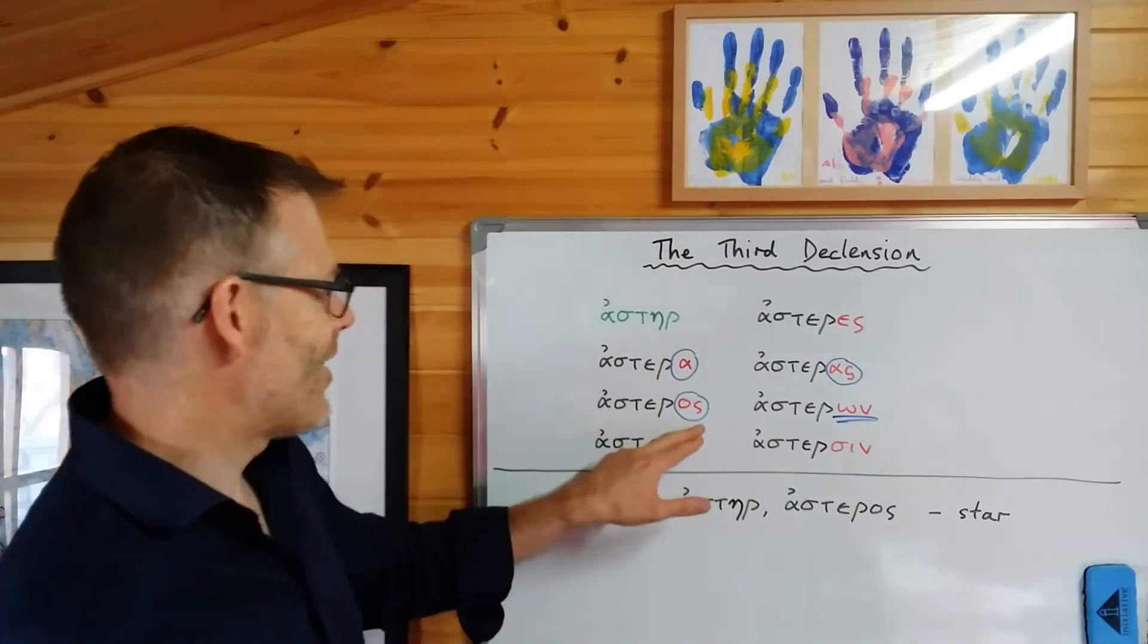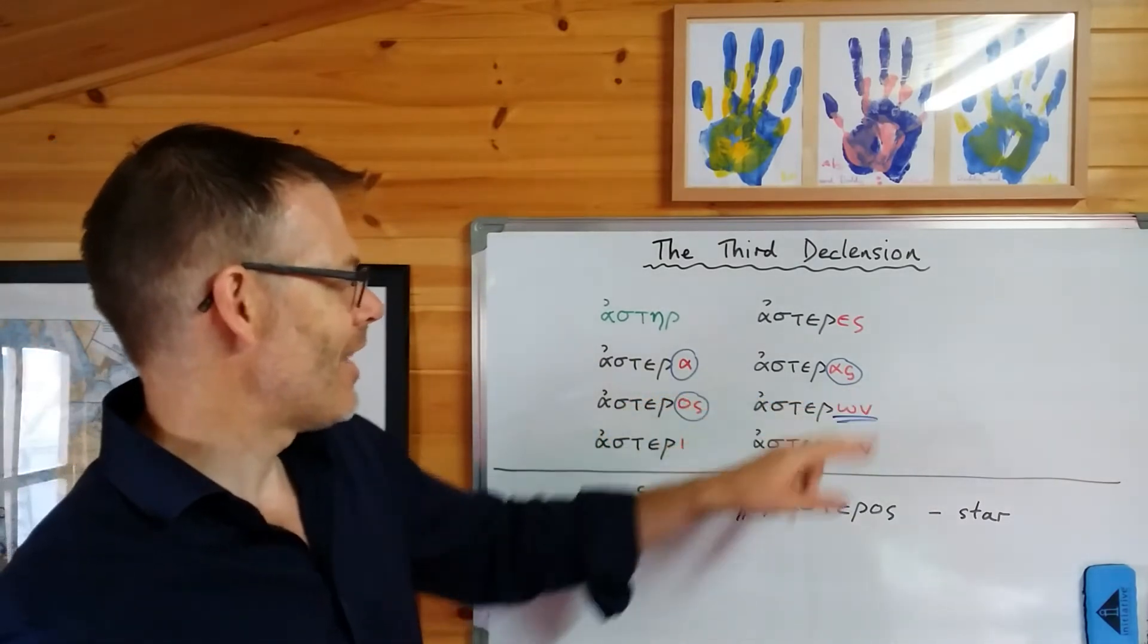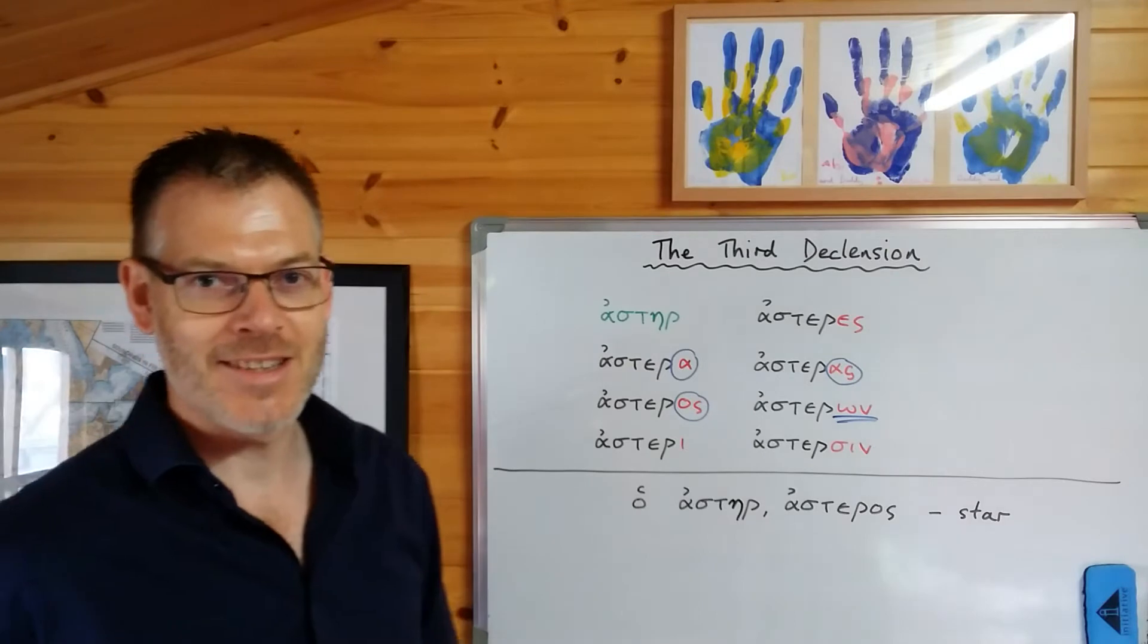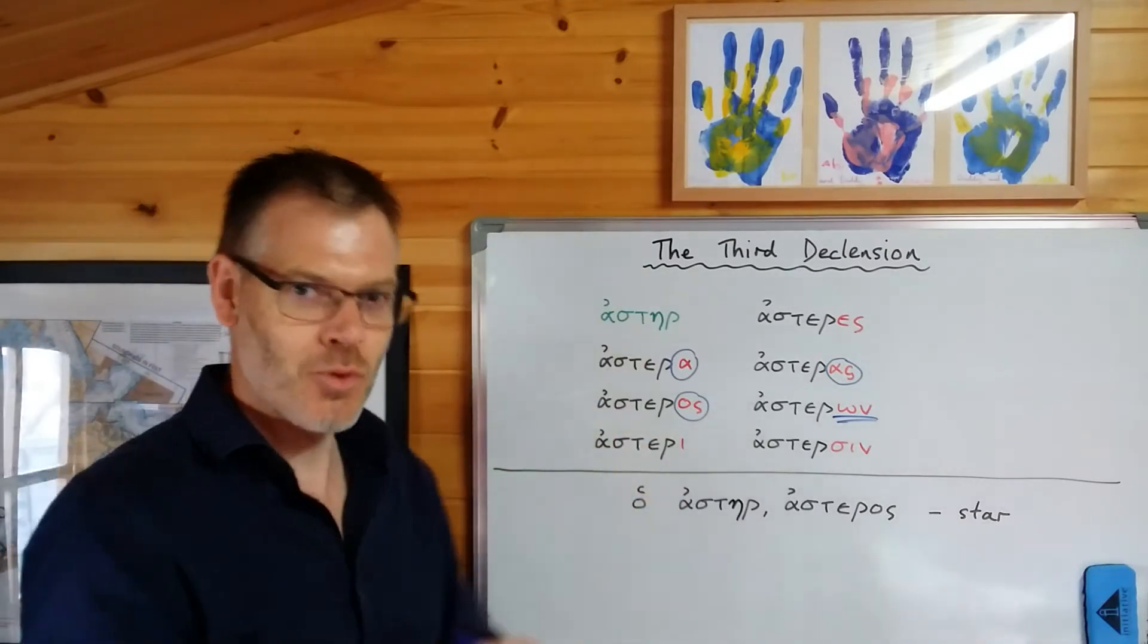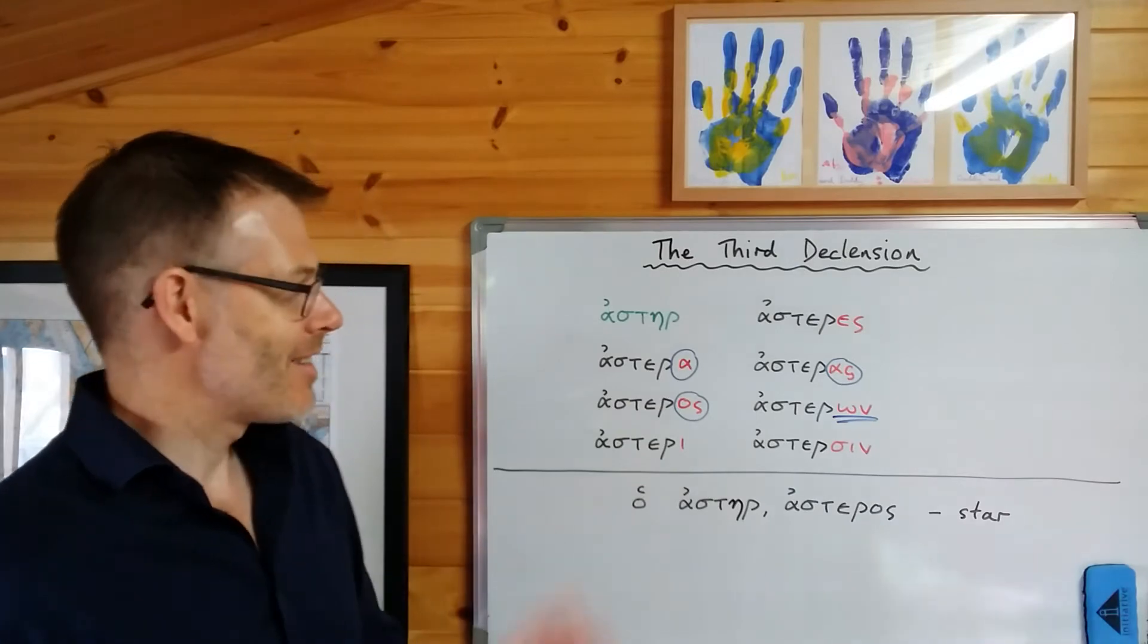For example, that occurs in logos, that occurs in neuter nouns in the plural. As ending occurs in some feminine nouns. So just got to watch out for that. But if you learn it like this, we'll come to those problems a little bit later on. So that's the first thing.